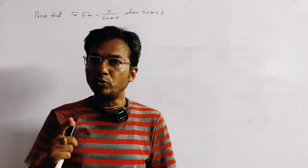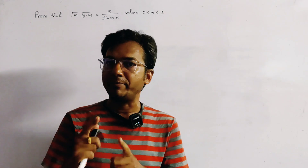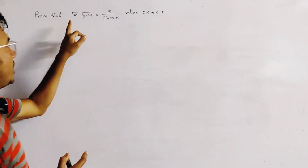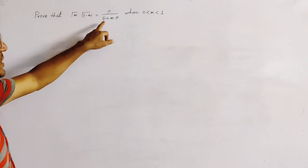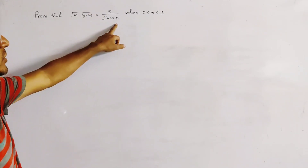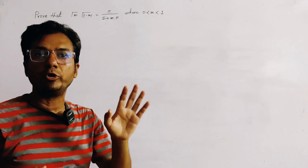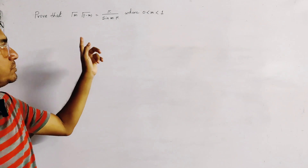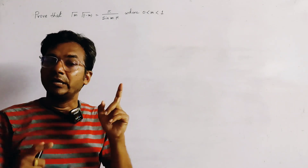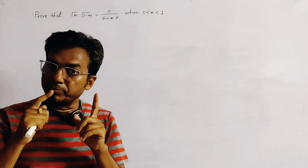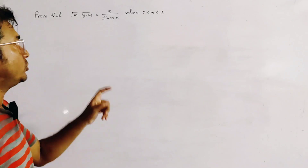In this class we want to prove an important relation of the gamma function: Γ(m)·Γ(1-m) = π/sin(mπ), where 0 < m < 1. This is a very important relation of the gamma function, it must be in your syllabus, and it frequently appears in university papers. So we have to prove this relation.